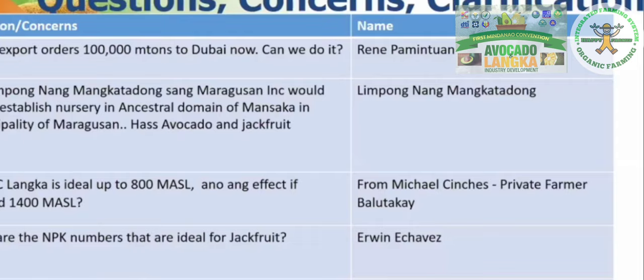Regarding the export order of 100,000 metric tons to Dubai, we really wish we had that volume right now. It is also an inspiring question. Looking at the series of work involved in exporting and moving goods, it is telling us about the potential of our products. In the highlands, avocado would be productive at about three years, and I've seen this myself where the Philippines has planted several avocado trees.